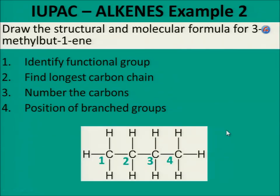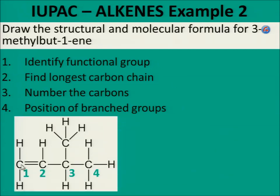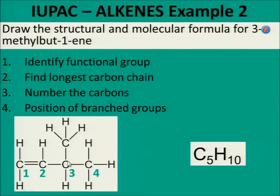Alkenes, example 2. Draw the structural and molecular formula for 3-methylbut-1-ene. Identify the functional group — it is an alkene. Find the longest carbon chain: 1, 2, 3, 4 carbons because it says 'bute'. Add the double bond at carbon 1 (1-ene) and the methyl group at carbon 3. The structural formula shows all the bonds. For the molecular formula, count 5 carbons and 10 hydrogens — C5H10.